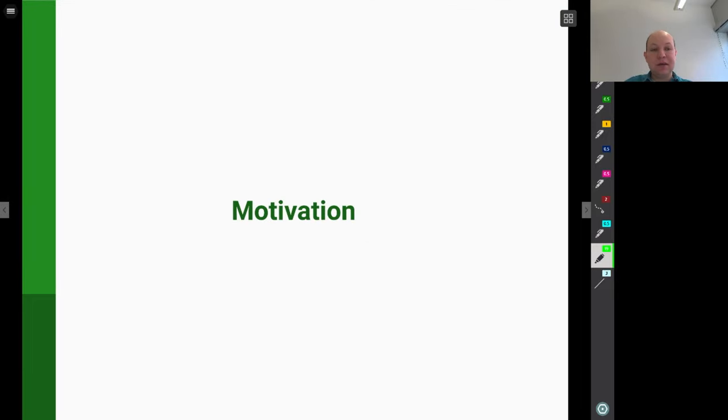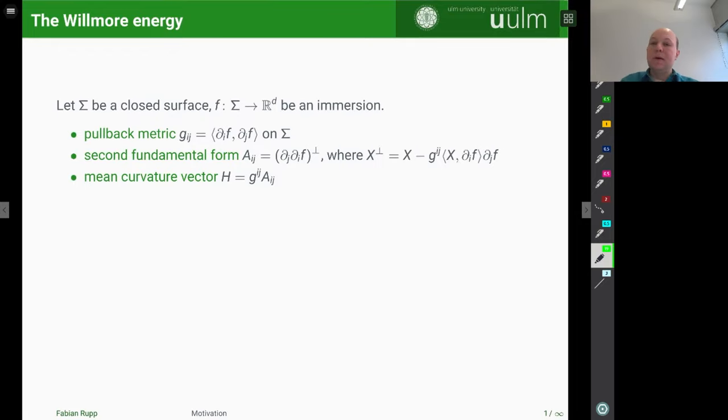So let's start as a motivation by reviewing the situation in the case of the Willmore energy of surfaces. For a closed surface sigma, here closed for me means it's compact, a compact two-manifold without boundary and an immersion f, smooth immersion of sigma into Euclidean space R^d.